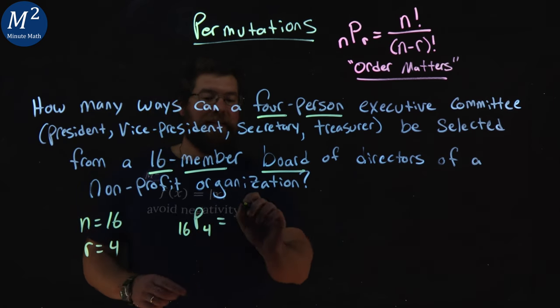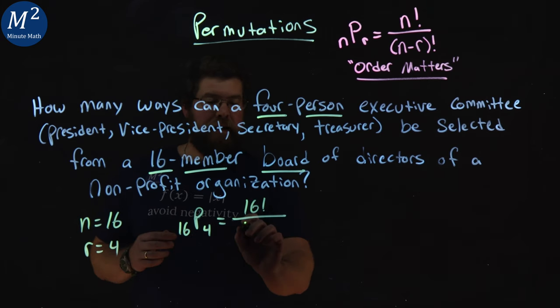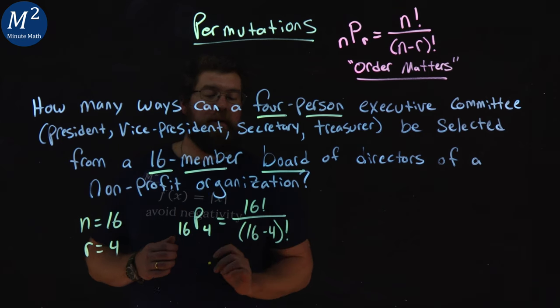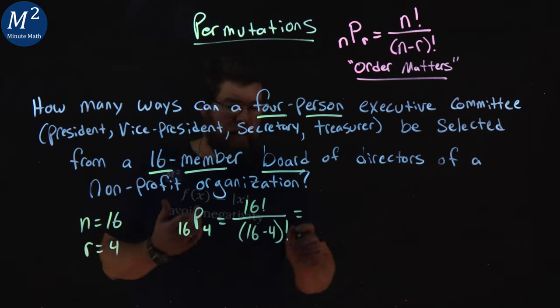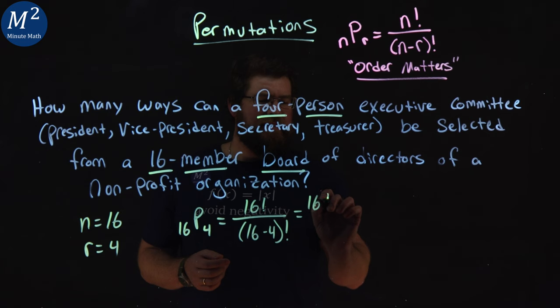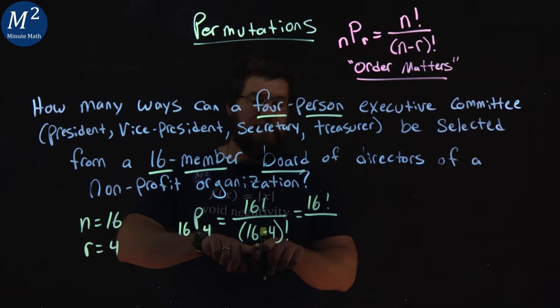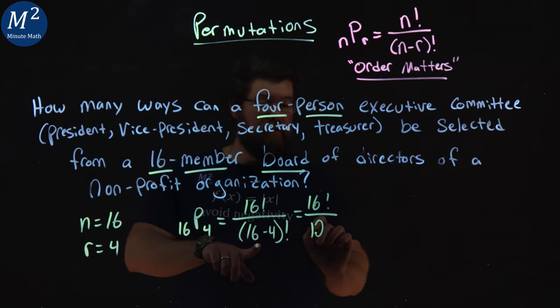So that's going to be 16 factorial over 16 minus 4 factorial in the denominator. Simplify this out just a little bit. 16 factorial here over 16 minus 4, which is 12 factorial.